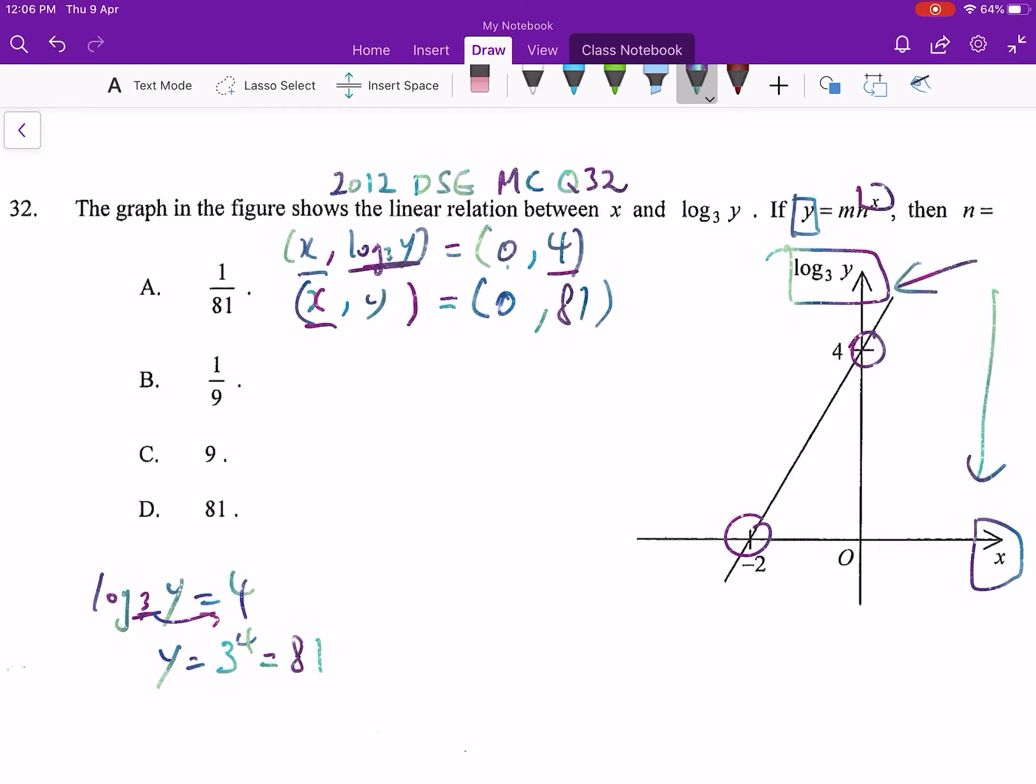This is called point transformation. Let's do the next one. x, log₃y equals (-2, 0). When I change it back to xy, it doesn't move for the x. We just keep it there. And log₃y equal to 0, that means y is 3 to the power 0, that means 1.